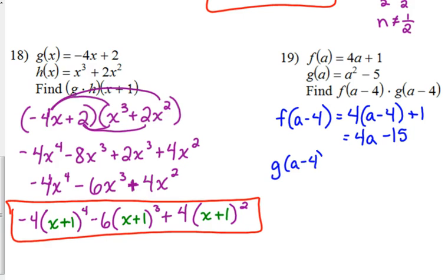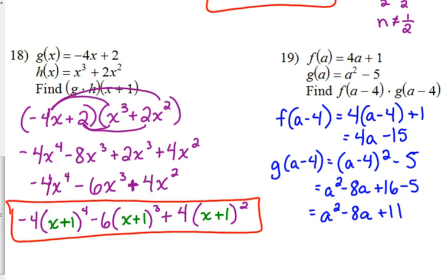g of a minus 4 would be a minus 4 squared minus 5. When we FOIL a minus 4, that's a squared minus 8a plus 16. So when we simplify, it's a squared minus 8a plus 11.